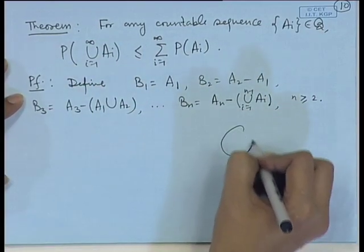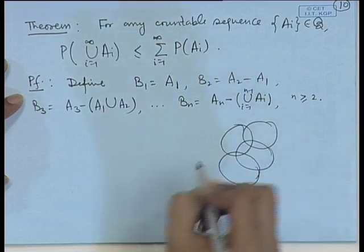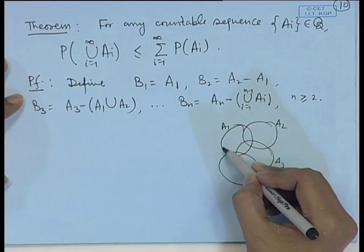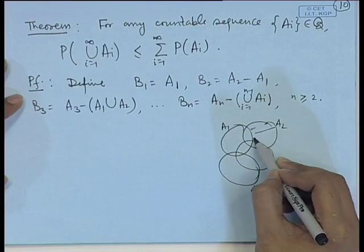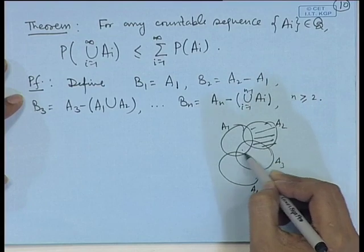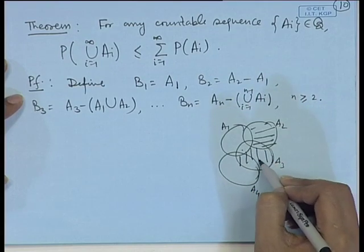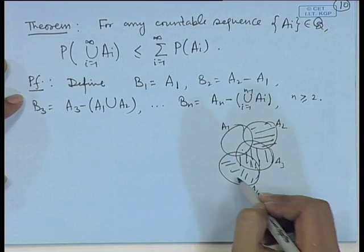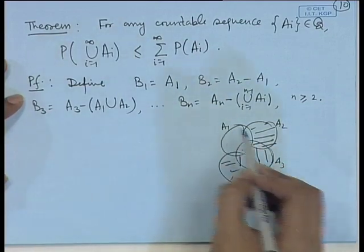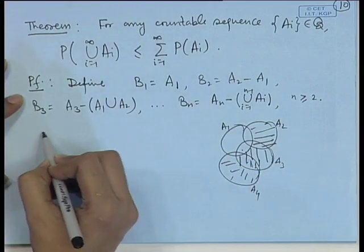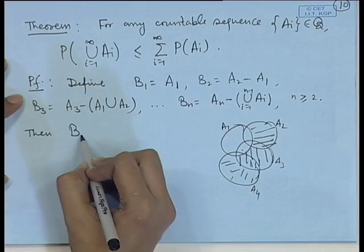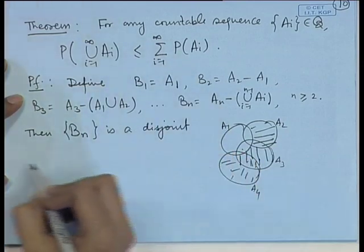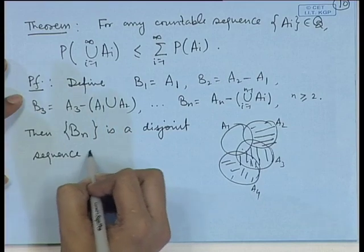A Venn diagram makes clear what sets we are defining. With sets A_1, A_2, A_3, A_4, etc., we take A_1, then A_2 minus A_1, then A_3 minus (A_1 union A_2), then A_4 minus (A_1 union A_2 union A_3), and so on. Naturally one can see that we are expressing the union as a disjoint union. Thus B_n is a disjoint sequence of sets.